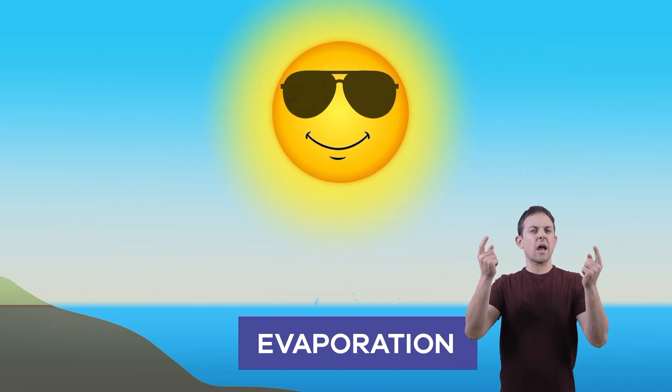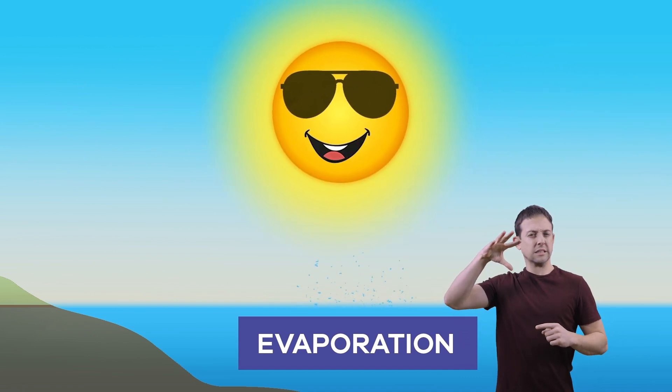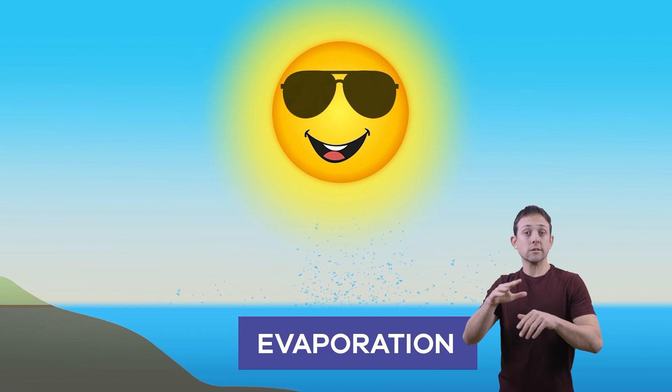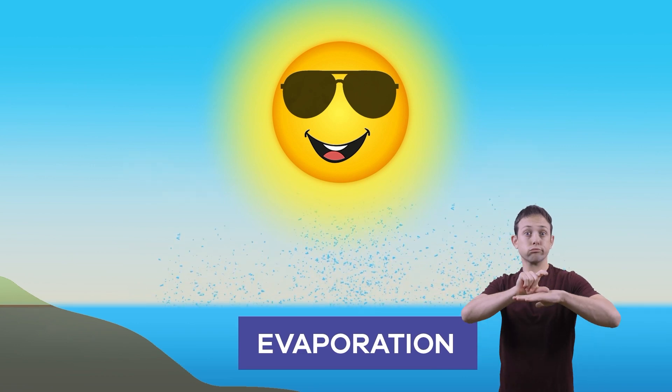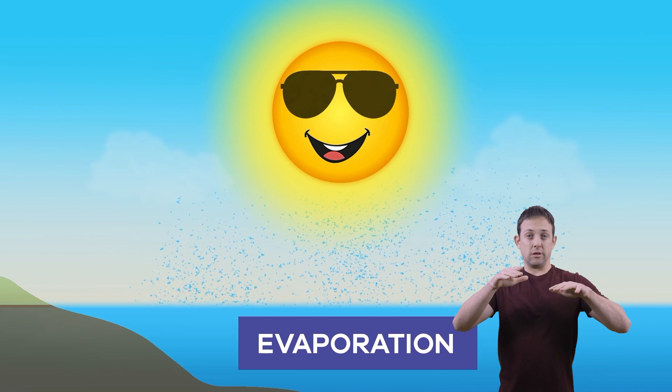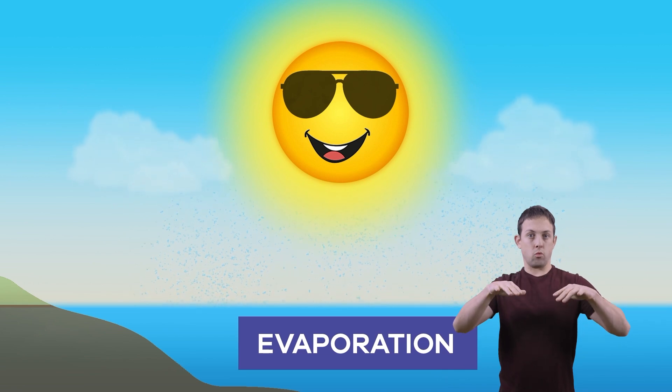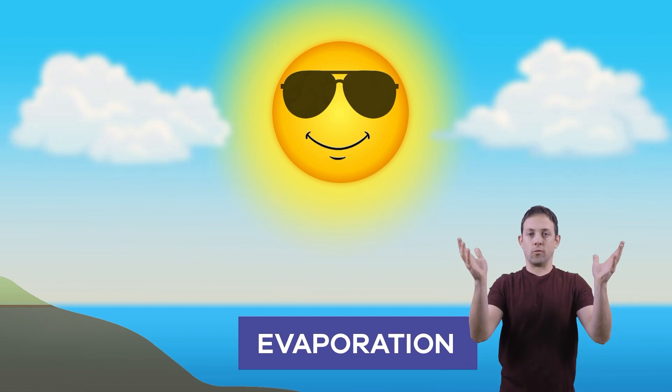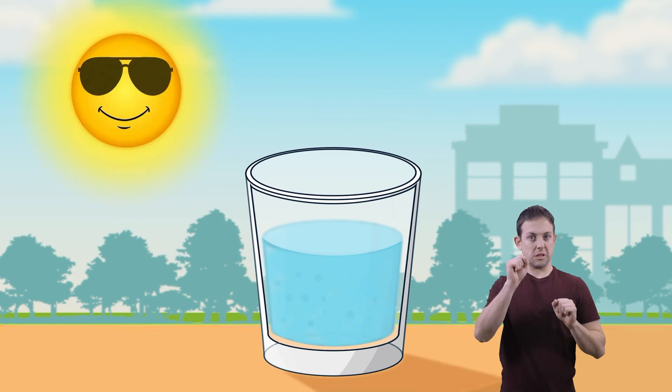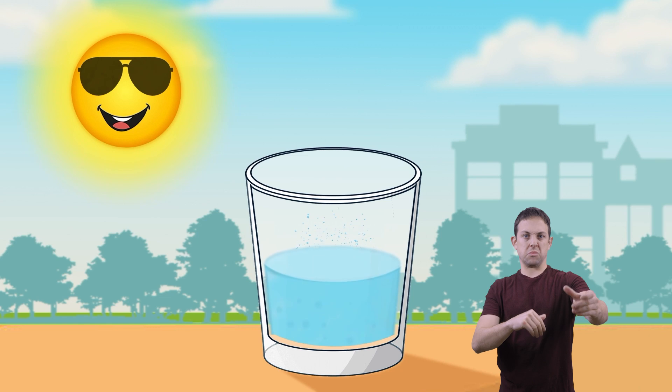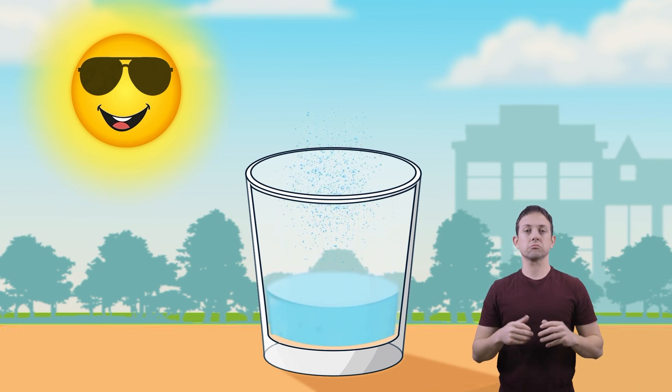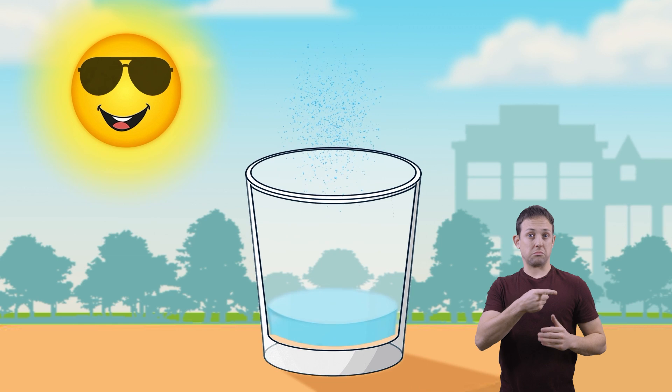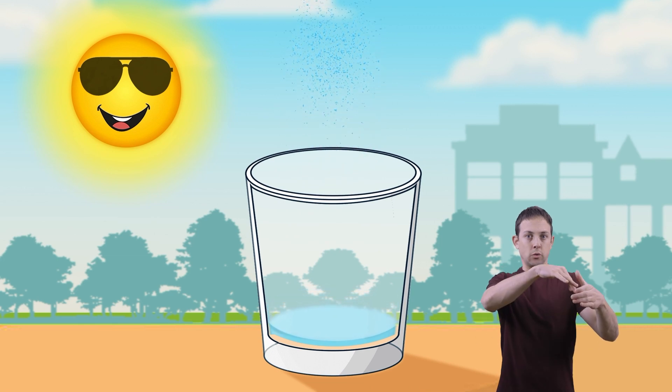Evaporation happens when the sun heats up the waters in oceans, lakes, rivers, and other bodies of water. When the water gets hot enough, it changes into a gas. This gas then evaporates into the air. You can see this process for yourself if you leave an open container of water in your home or outside. Once it gets hot enough, it will evaporate.